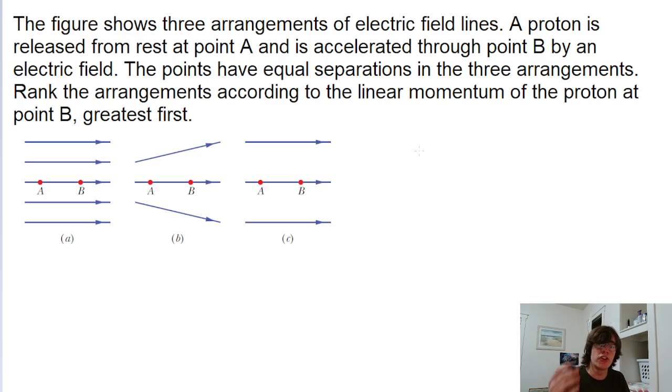The farther apart the lines are, the weaker the field is. In this problem, we can see in all three scenarios that each of the three scenarios have different densities of the lines.